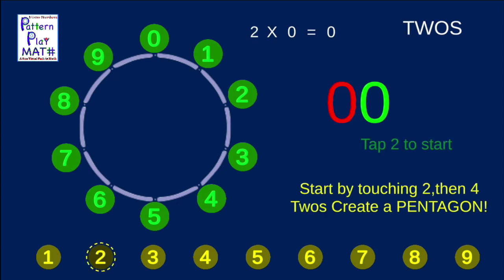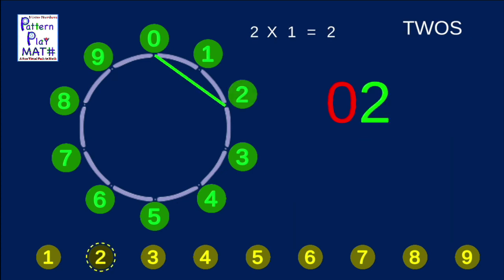We start at 0, so we touch 2, and there's our line. From 2, we move 2 more spaces, so we'll touch 4, and then 6, and then 8, and then 0.